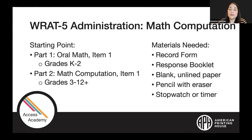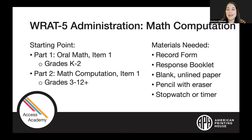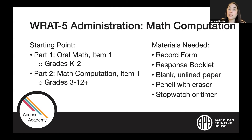For the math computation subtest, the materials needed include the record form for writing responses and scoring, a student response booklet for the large print edition, blank and lined paper to cover visually distracting items, a pencil with an eraser, and a timer and stopwatch. This subtest also has a part one and part two — the same rules apply for administration. If you start a learner with part one, you want to continue into part two and follow the discontinuation rule of five incorrect responses before ending.